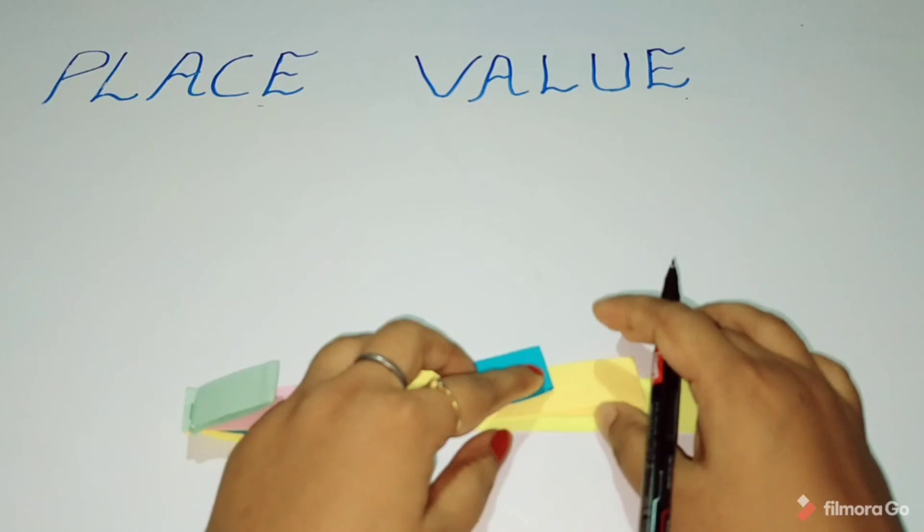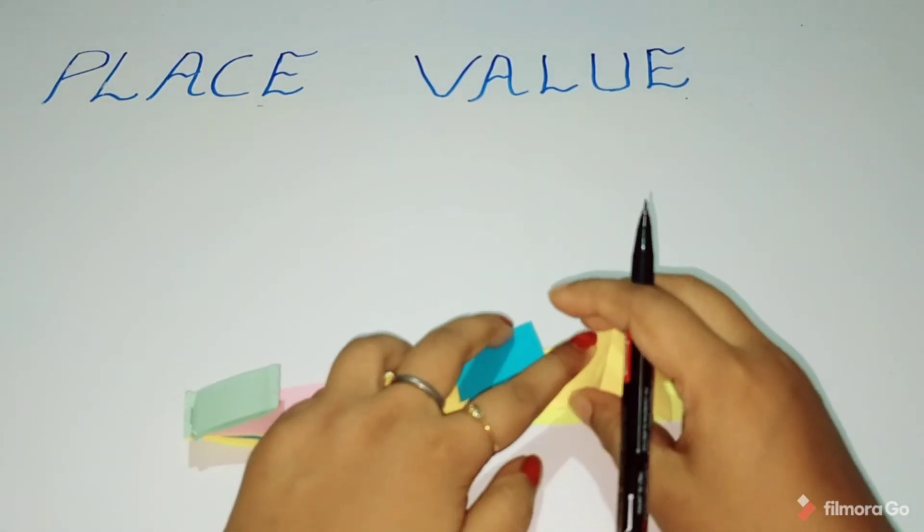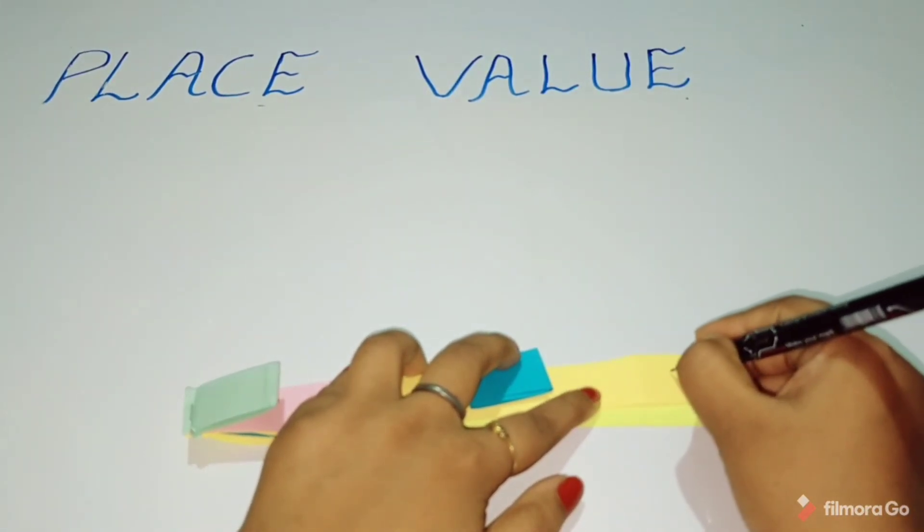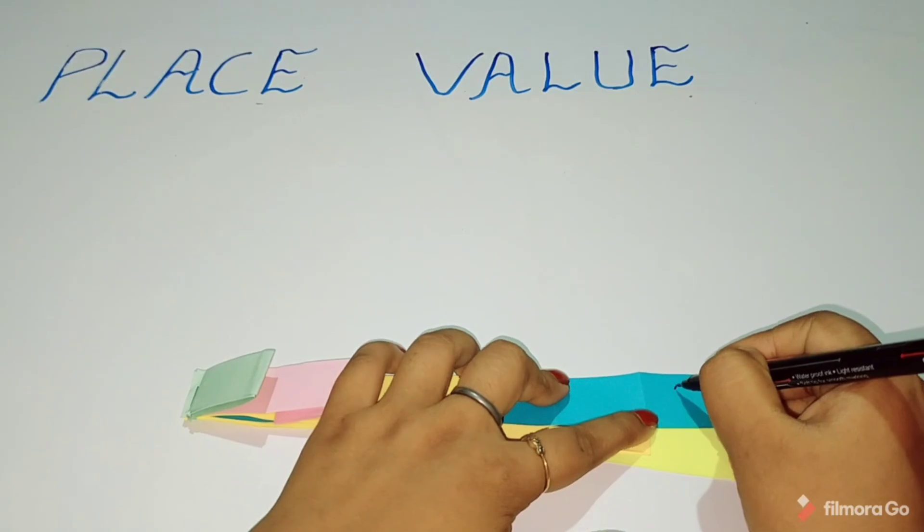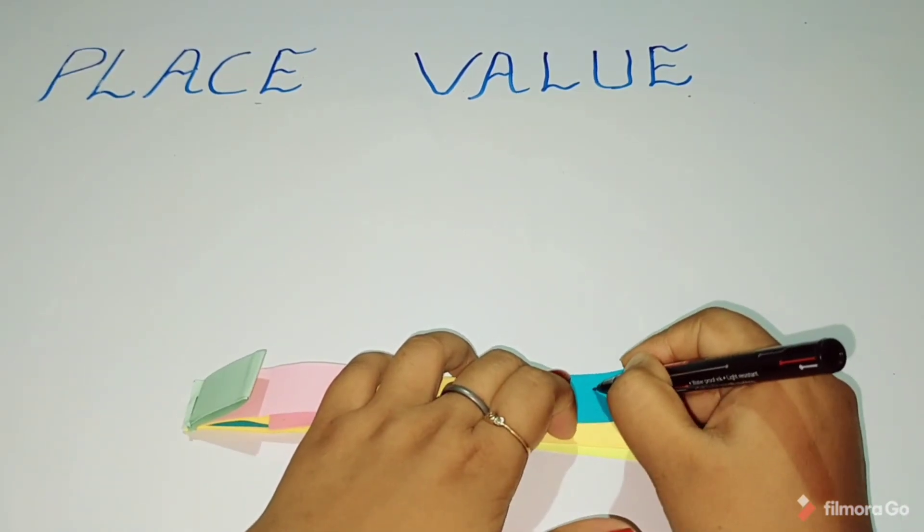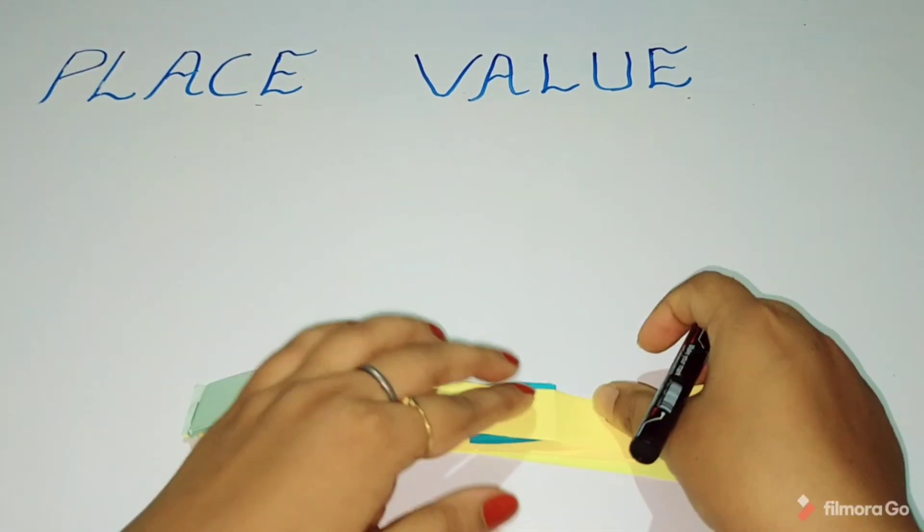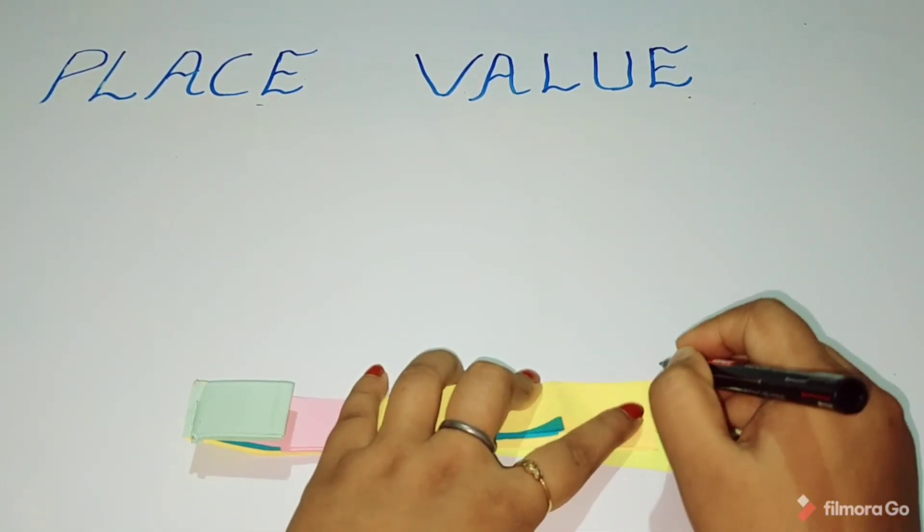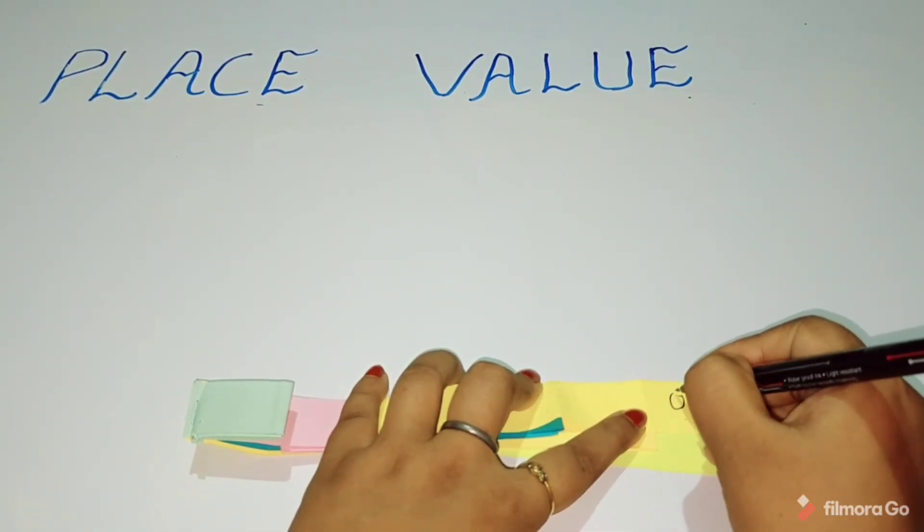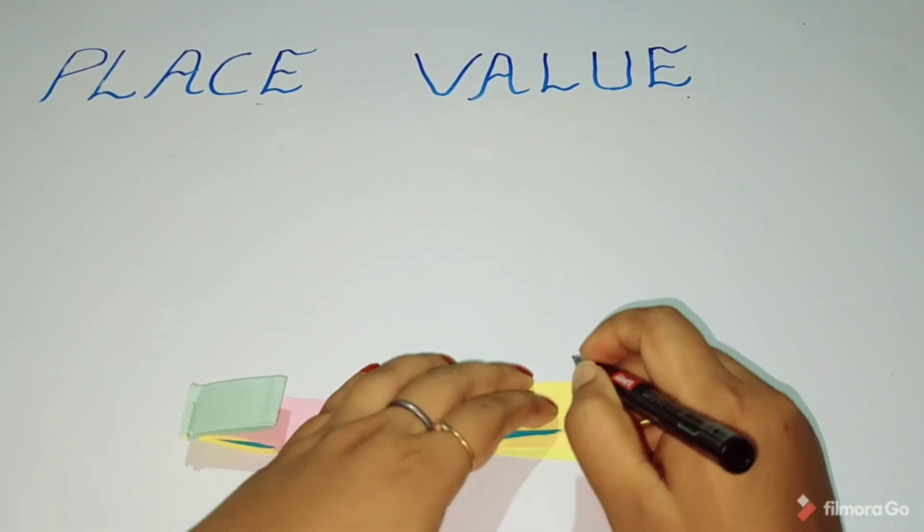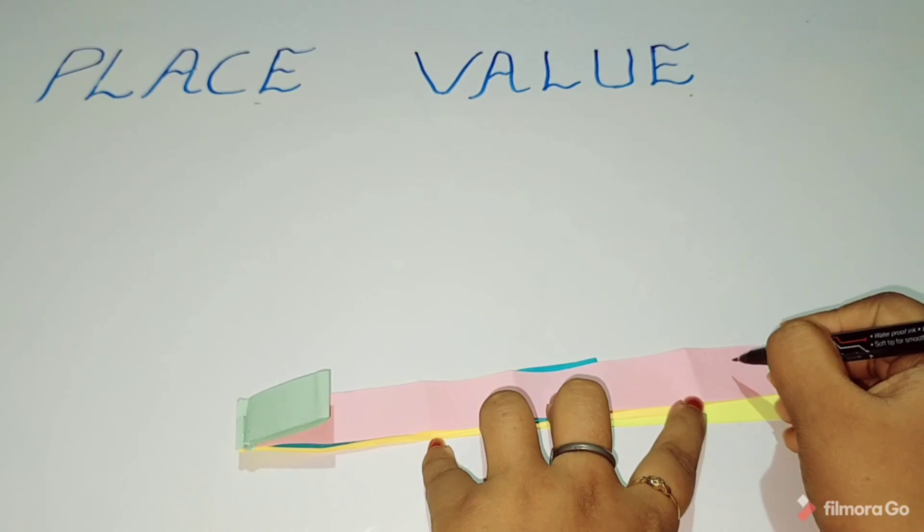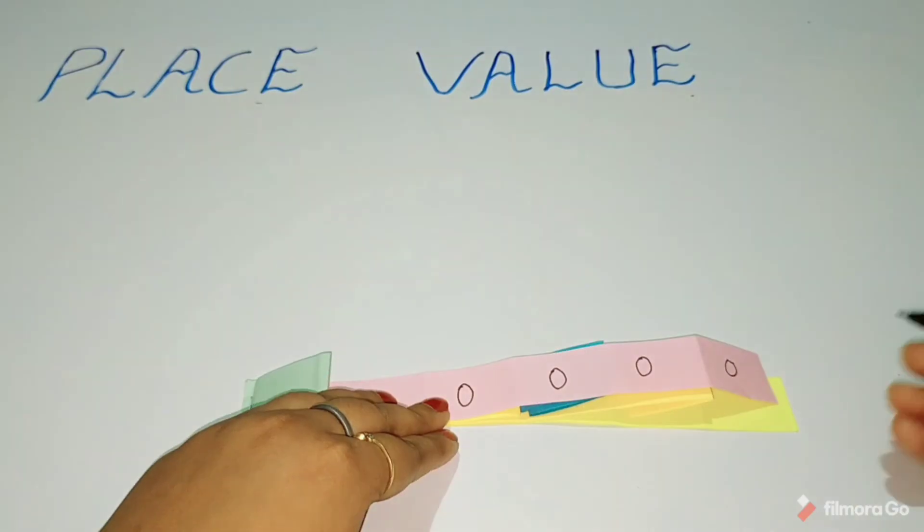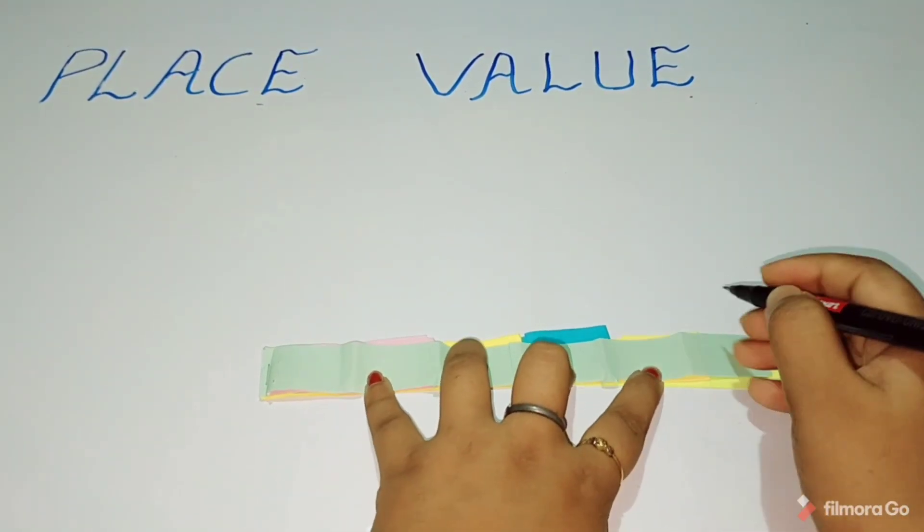Now we'll write zeros in the folded parts. Here is one folded part, so we'll write one zero. Two folded parts, so two zeros. Three folded parts, so three zeros. Four folded parts, so four zeros. Five folded parts, so five zeros.